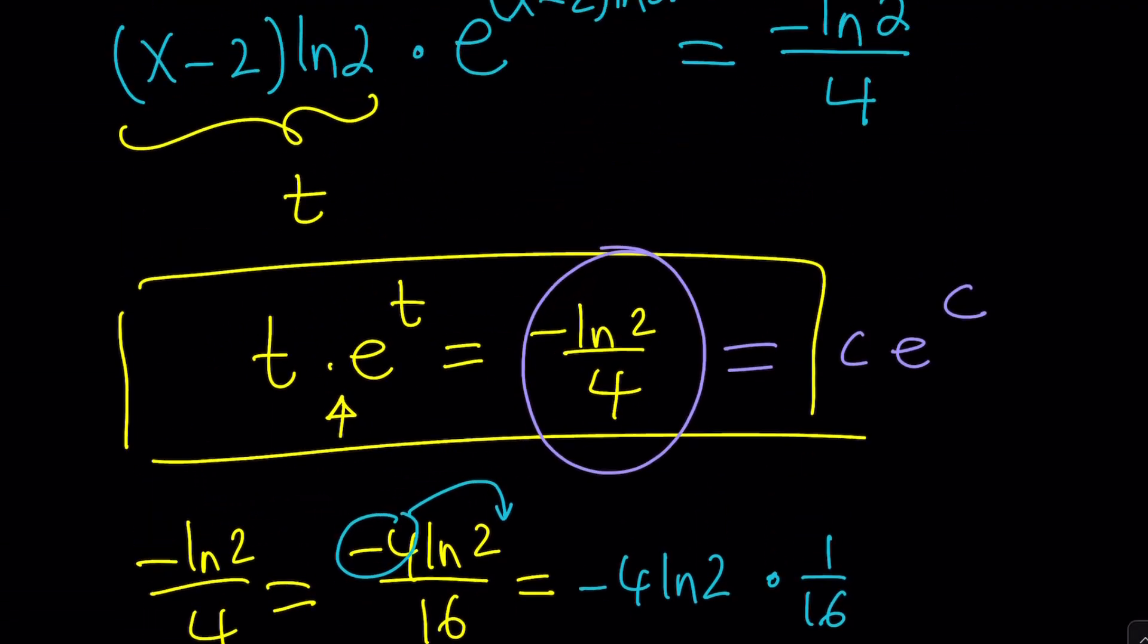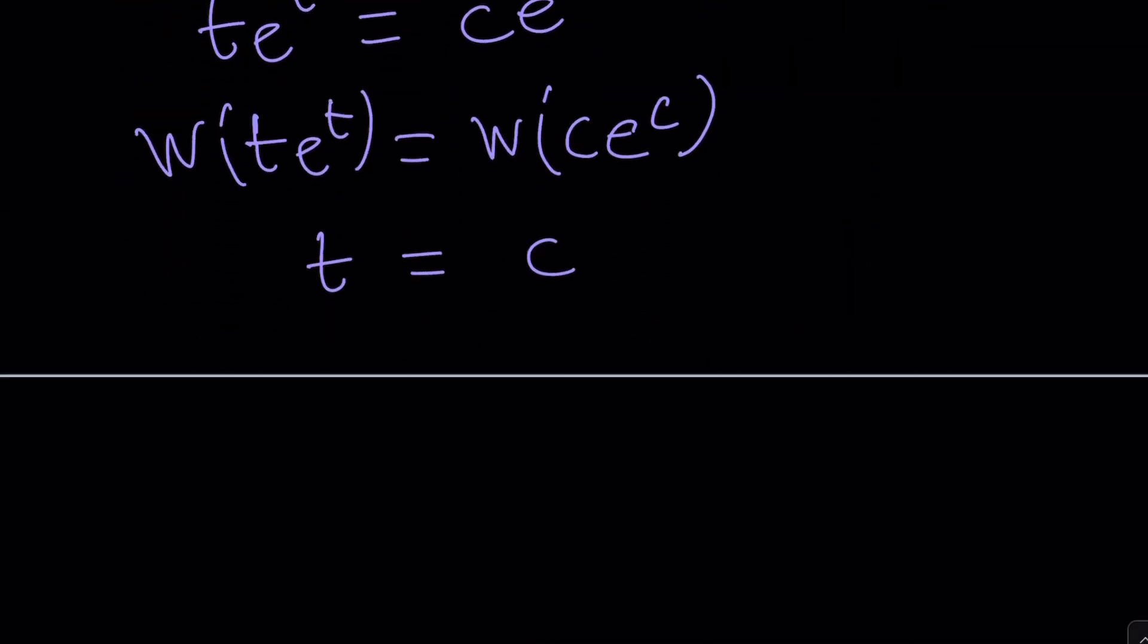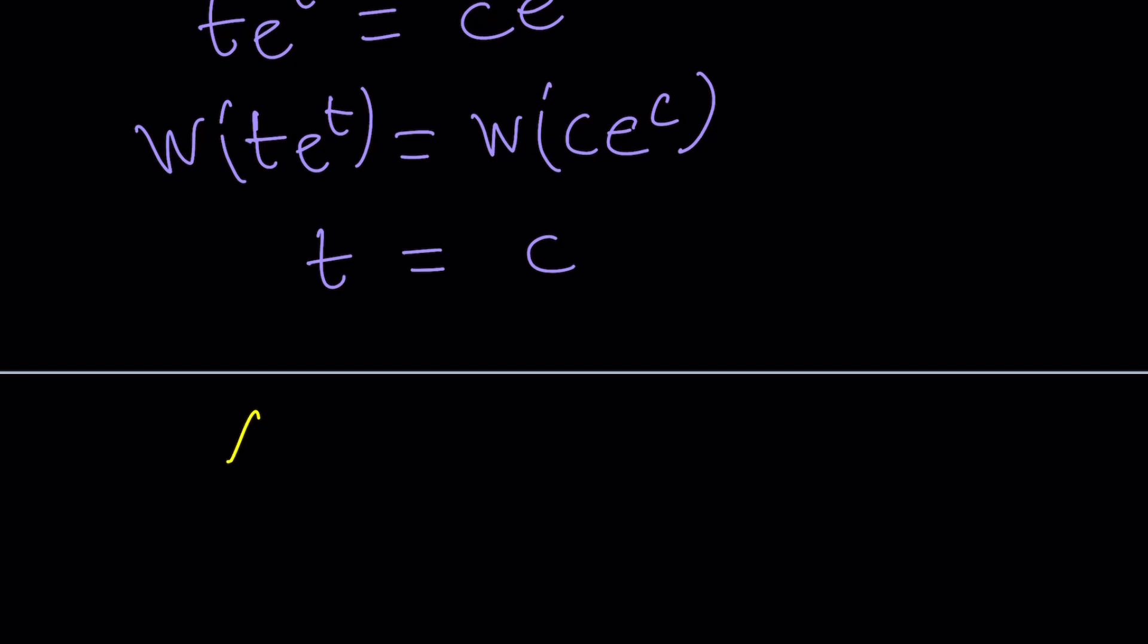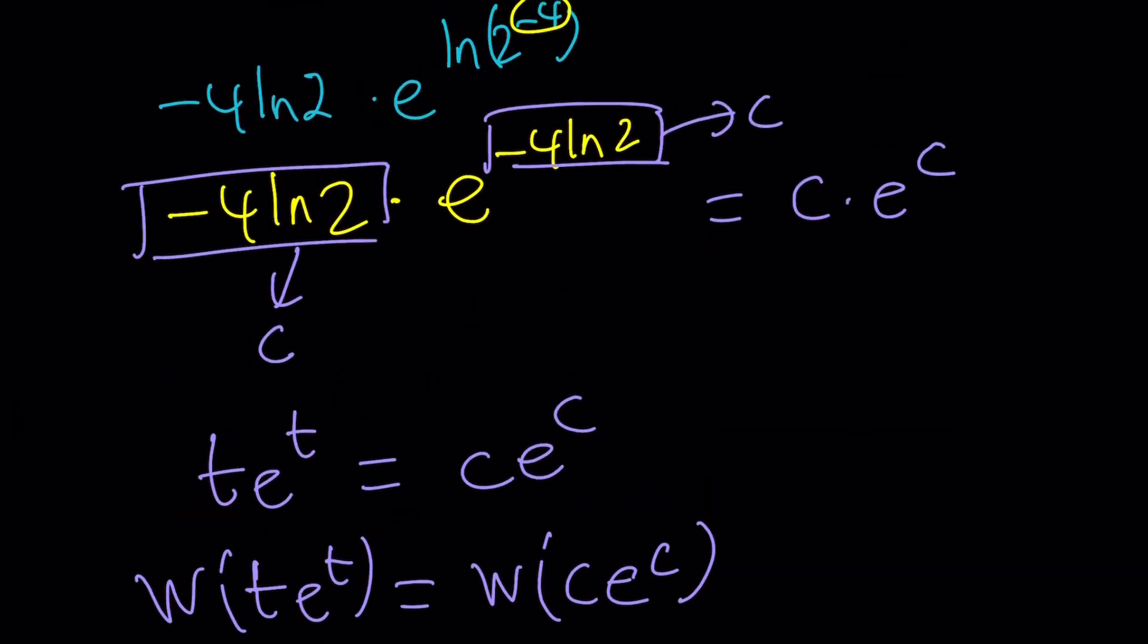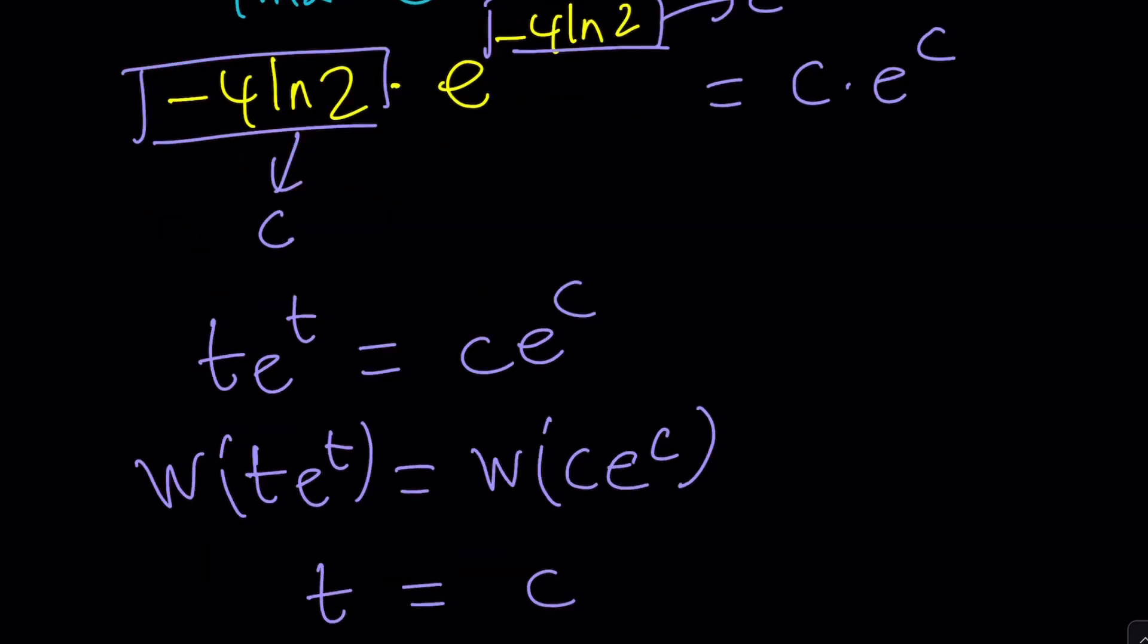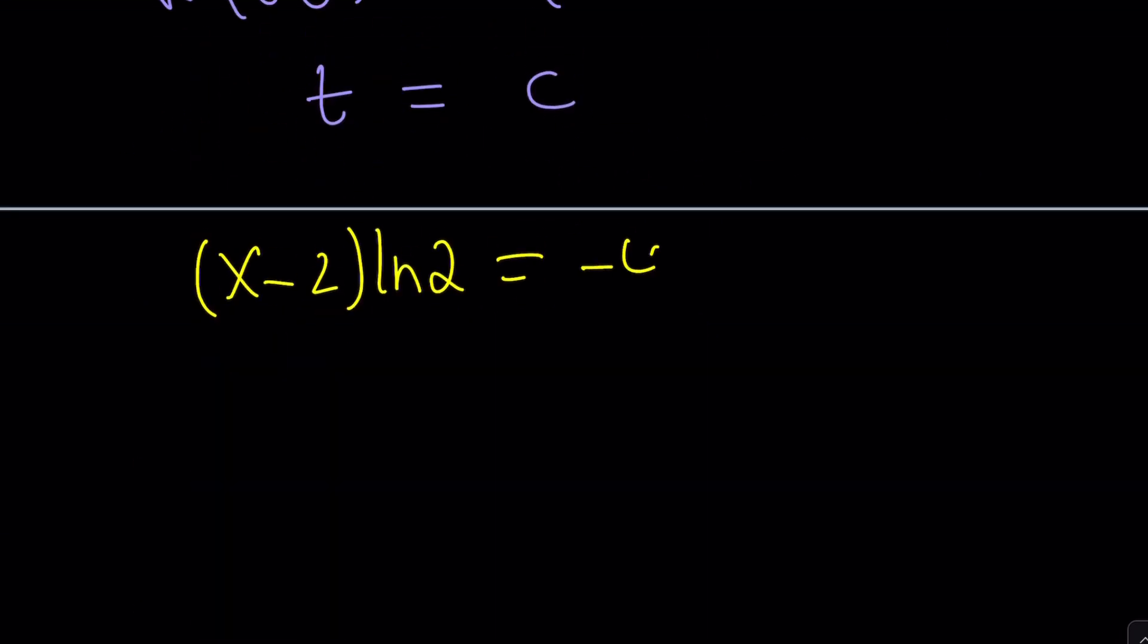What is T and what is C? Let's back substitute. T is x minus 2 ln 2, and C is negative 4 ln 2. So at this point, you can just cancel out the ln 2 and come up with x minus 2 equals negative 4, and from here you get x equals negative 2.